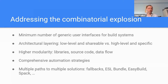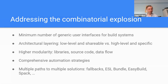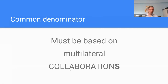Since we are moving toward higher modularity, the build system has to manage libraries, different places in the source code, and increasingly the data flow. At the end, what we have is multiple paths to multiple solutions. For example, to manage the dependencies of Abinit, you have the basic quick-and-dirty solution — the fallbacks — but now you also have access to the ESL bundle and frameworks like EasyBuild and SPACK to build in different environments. What is common to all of this is that it can only work through multilateral collaborations.